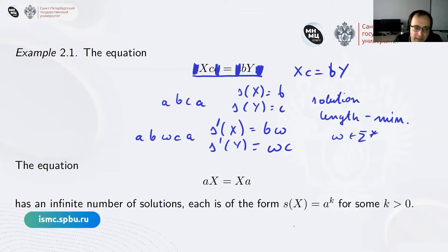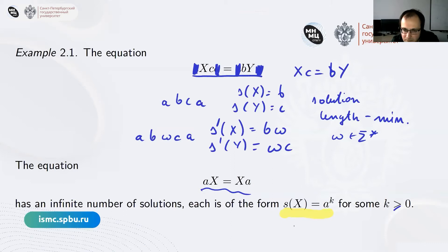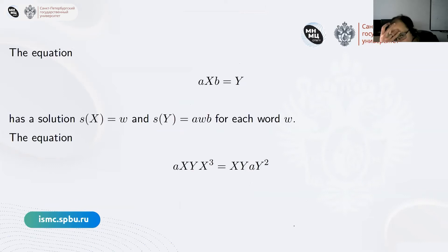Another example: the equation a x equals x y. One can show that all solutions are of the form a^k — since the first letter must be a, by simple induction, all letters substituted for x must be a. Whether k is greater than or equal to zero depends on whether we allow the empty substitution. The length-minimal substitution would be a or epsilon, and the solution words are a squared or a.